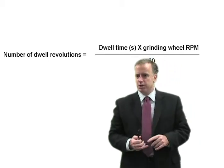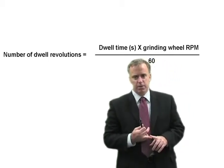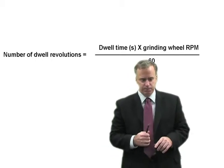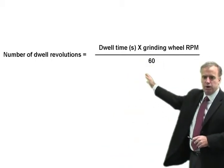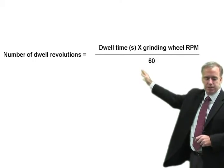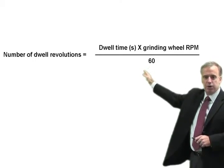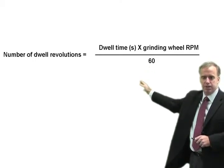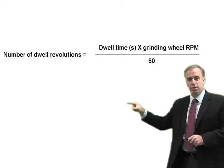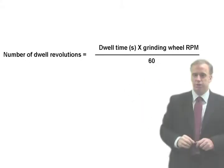So instead of how long should I dwell, let's determine how many revolutions we want it to take. There's a quick calculation. The number of dwell revolutions is your dwell time in seconds times your grinding wheel RPM divided by 60. That will give you the number of revolutions of the wheel during dwell.